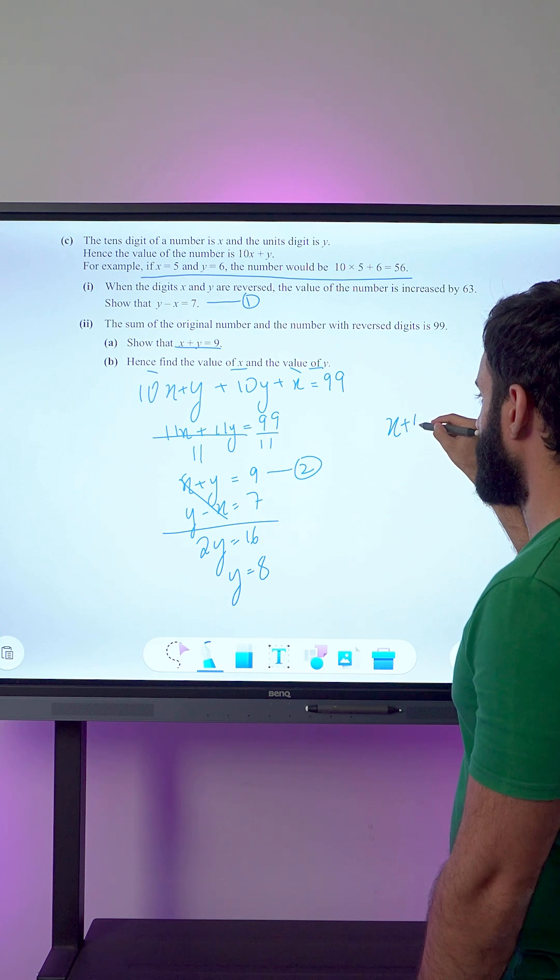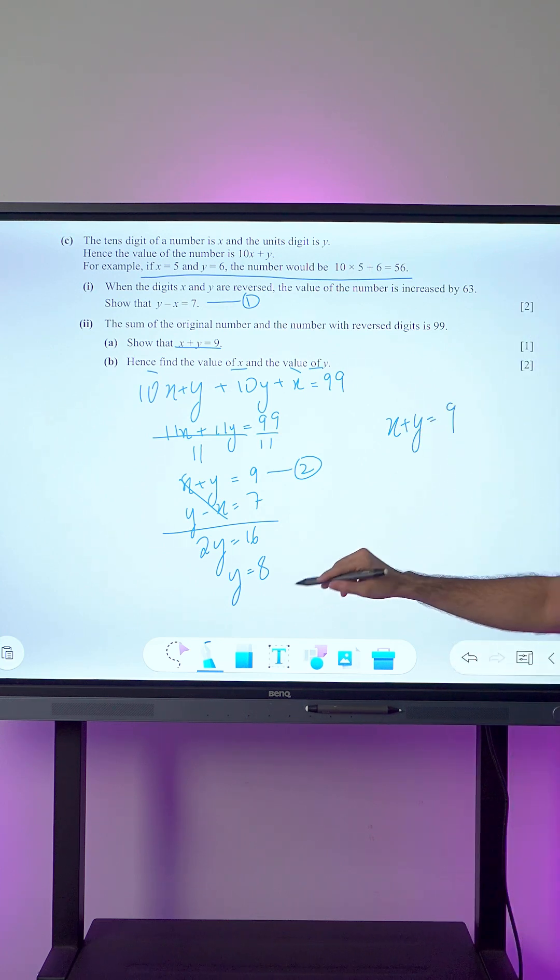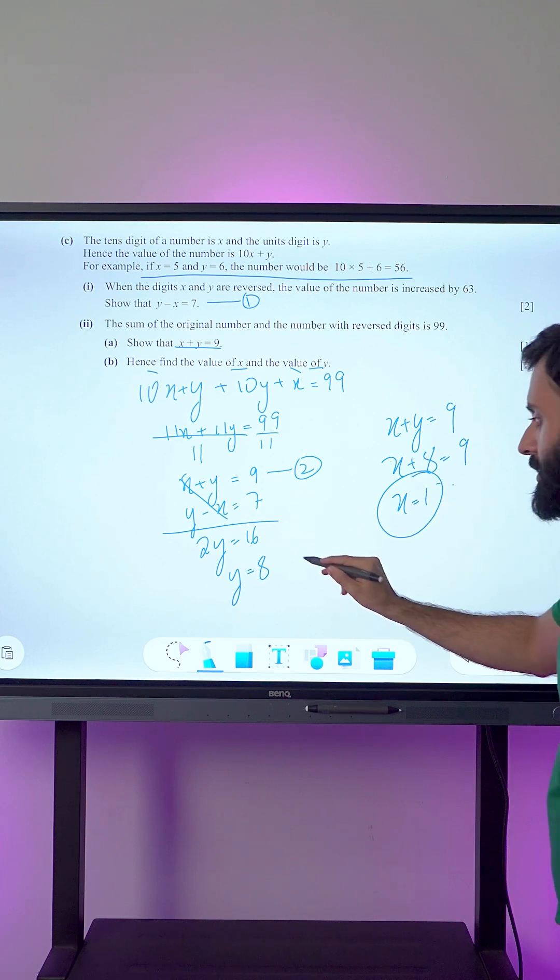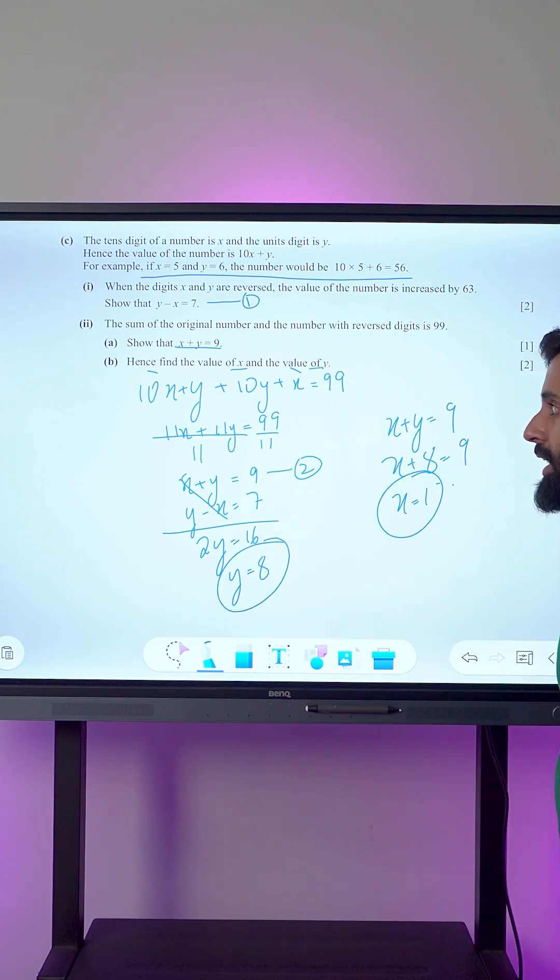X plus y equals 9. We have the value of y, that's 8. So x plus 8 equals 9. The value of x is 1. There you go, we have the value of x and the value of y, and that is the end of the question.